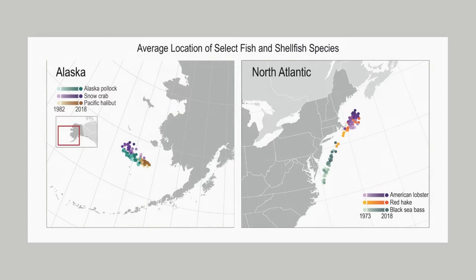These maps show the annual average locations for three species — Alaska pollock, snow crab, and Pacific halibut — in the eastern Bering Sea from 1982 to 2018, and for three species — American lobster, red hake, and black sea bass — along the northeastern U.S. coast from 1973 to 2018. Dots are shaded from light to dark to show change over time.